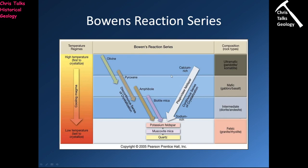Now for even more information we have Bowen's Reaction Series. It's similar to the previous diagram but with some differences. On one axis we have magma temperature — high at one end, around 1400°C, and low at the other, around 700°C — and we have ultramafic, mafic, intermediate, and felsic magma types. Ultramafic rocks will be rich in olivine, have some pyroxene, and some calcium-rich plagioclase feldspar.